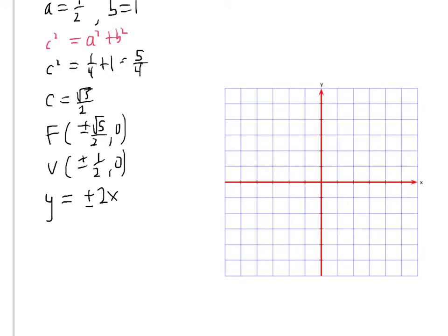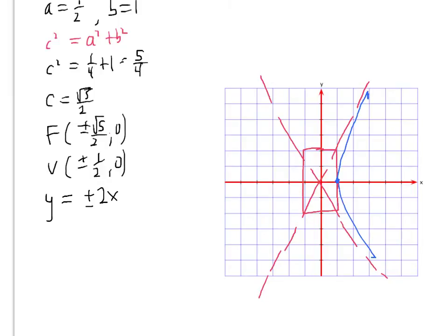The vertices are at plus or minus one half, zero. The equations of the asymptotes are y equals plus or minus b over a, and one over one half is two, so the asymptotes are y equals plus or minus 2x. When graphing, since a and b are small, make each tick mark one half units — this puts one half on the x-axis and 1 on the y-axis. Draw the asymptotes y equals 2x and y equals negative 2x, then start at the vertex at one half, zero and make the graph asymptotic to those lines.